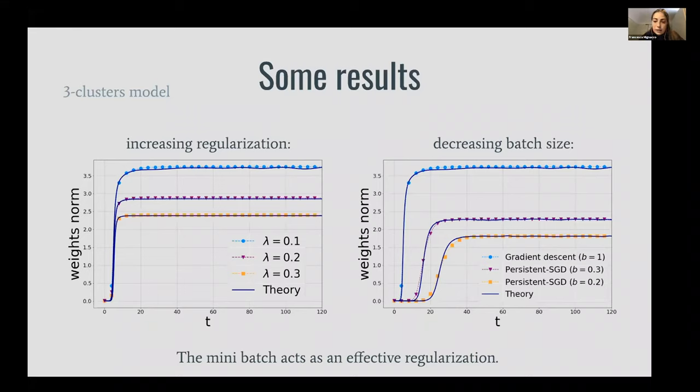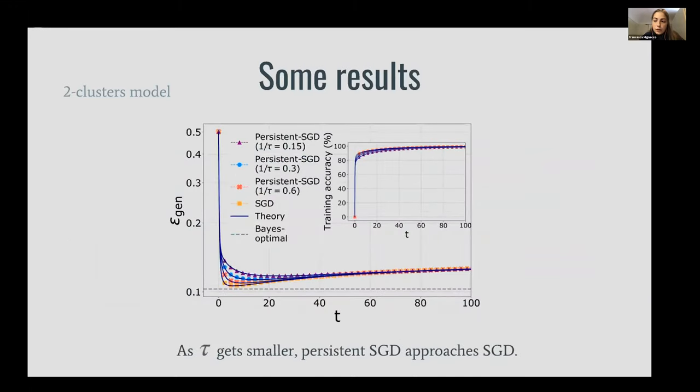Finally, if we look at the comparison between our variant of SGD algorithm compared to the standard SGD—if we look at persistent SGD at different characteristic times tau—we see that the generalization error approaches the one of stochastic gradient descent when the characteristic time goes to zero.